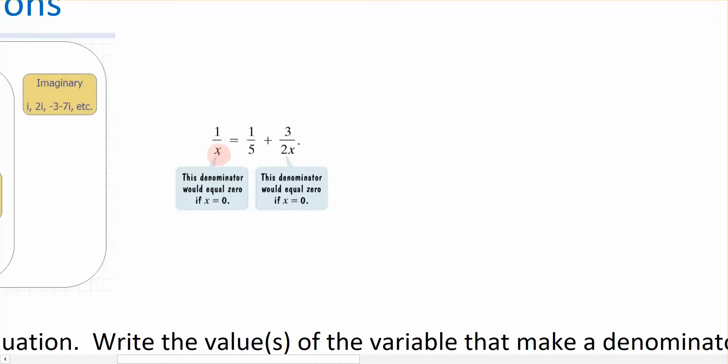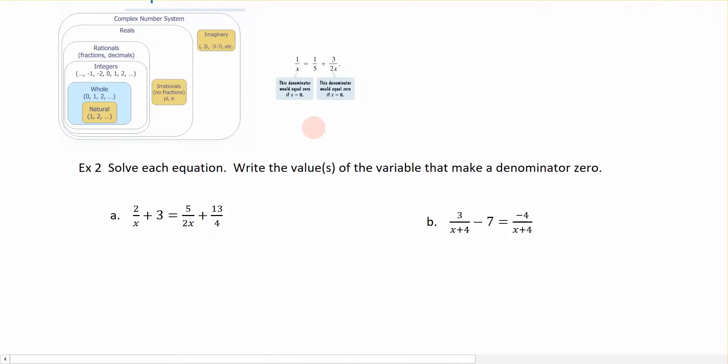In this particular case, I know that the number zero is not allowed to be a possible solution for x, because if I were to replace x with zero, it would cause this denominator to be zero. So some things to think about as you're working on your rational equations.